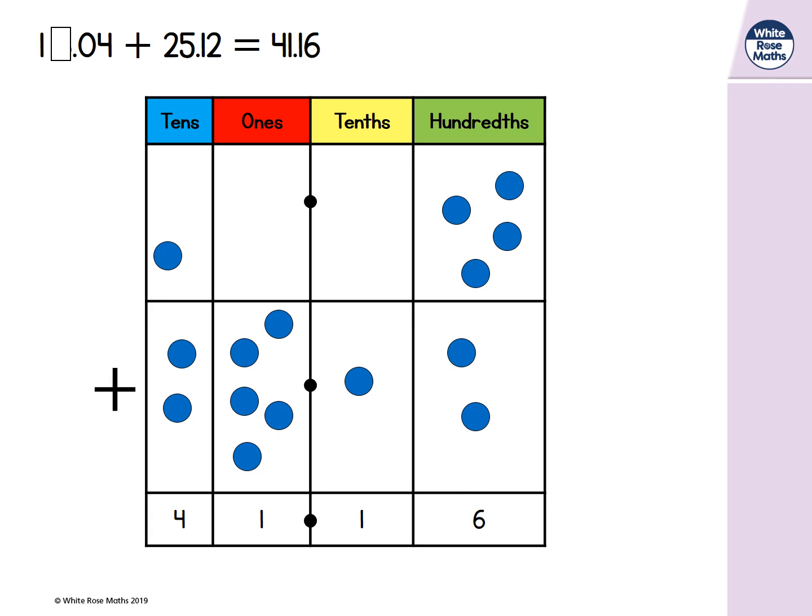The tenths column is fine as we know both digits. What's happening in the ones column? At first this appears rather confusing. Because how can 5 ones add something equal 1 one?